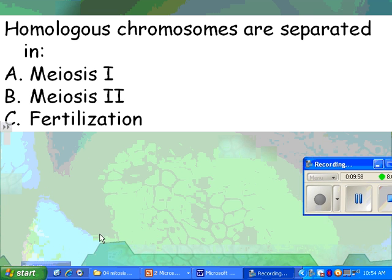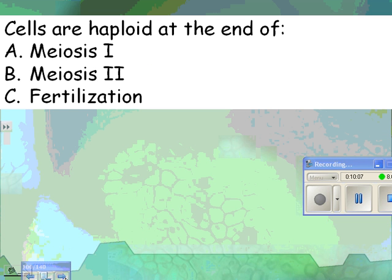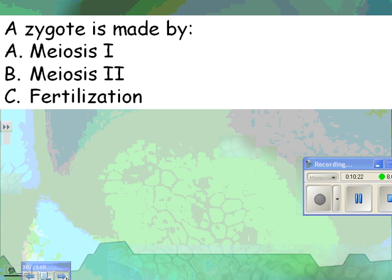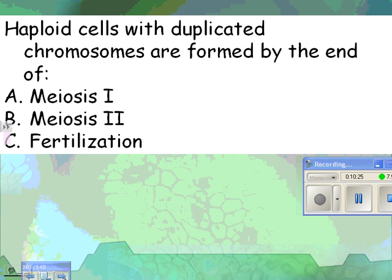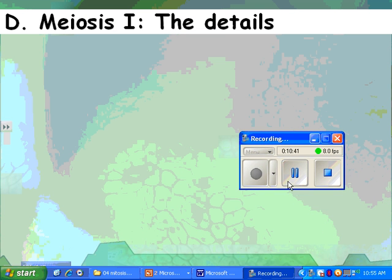Quick quiz: Homologous chromosomes are separated in meiosis I. Sister chromatids are separated in meiosis II. Cells are haploid at the end of meiosis I and remain haploid through meiosis II — that's where they become haploid. The diploid number is restored in fertilization. A zygote is made by fertilization. Haploid cells with duplicated chromosomes are formed at the end of meiosis I. Haploid cells with unduplicated chromosomes are formed by the end of meiosis II. The next thing we'll do is look at the details of all this stuff.